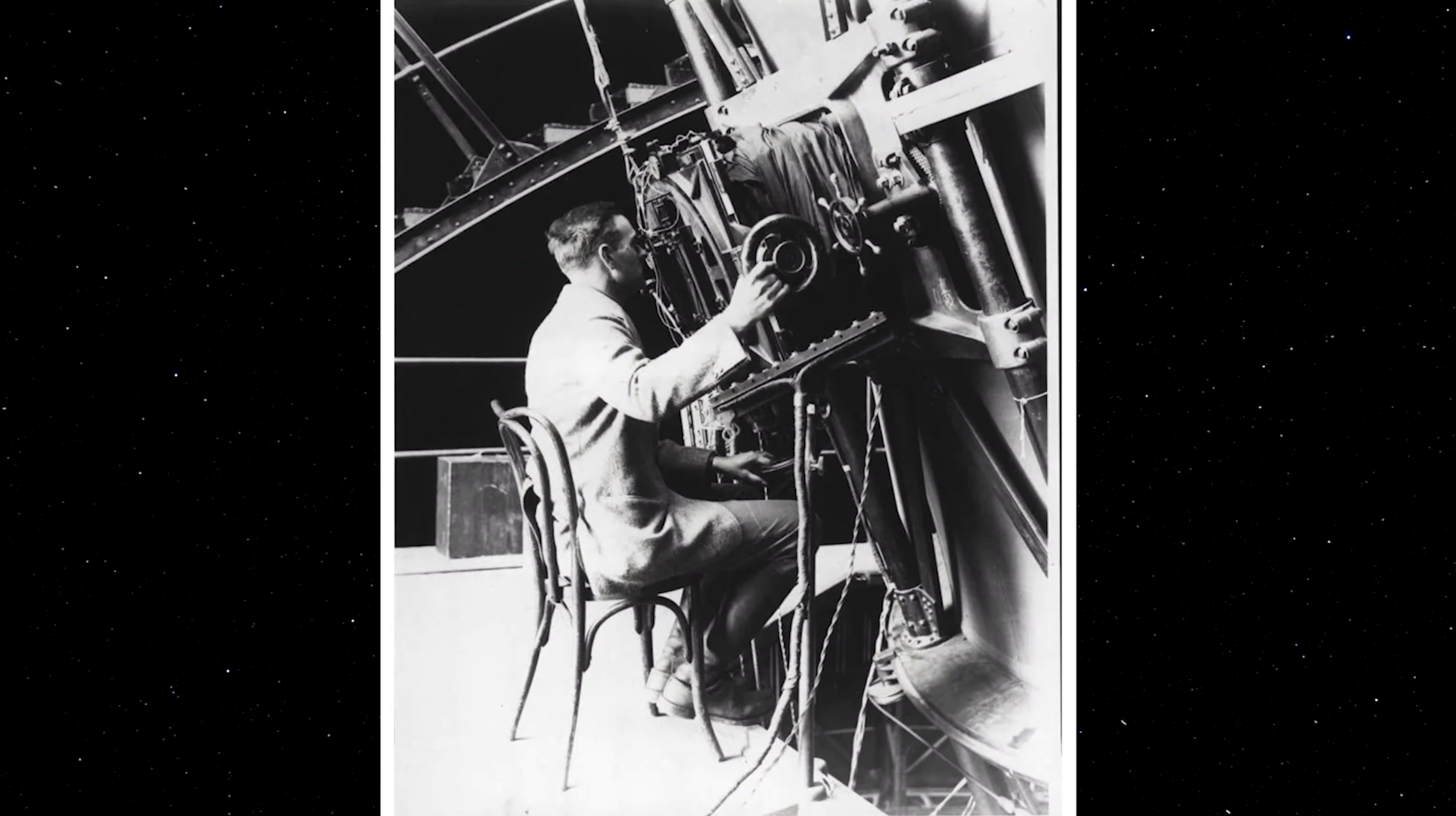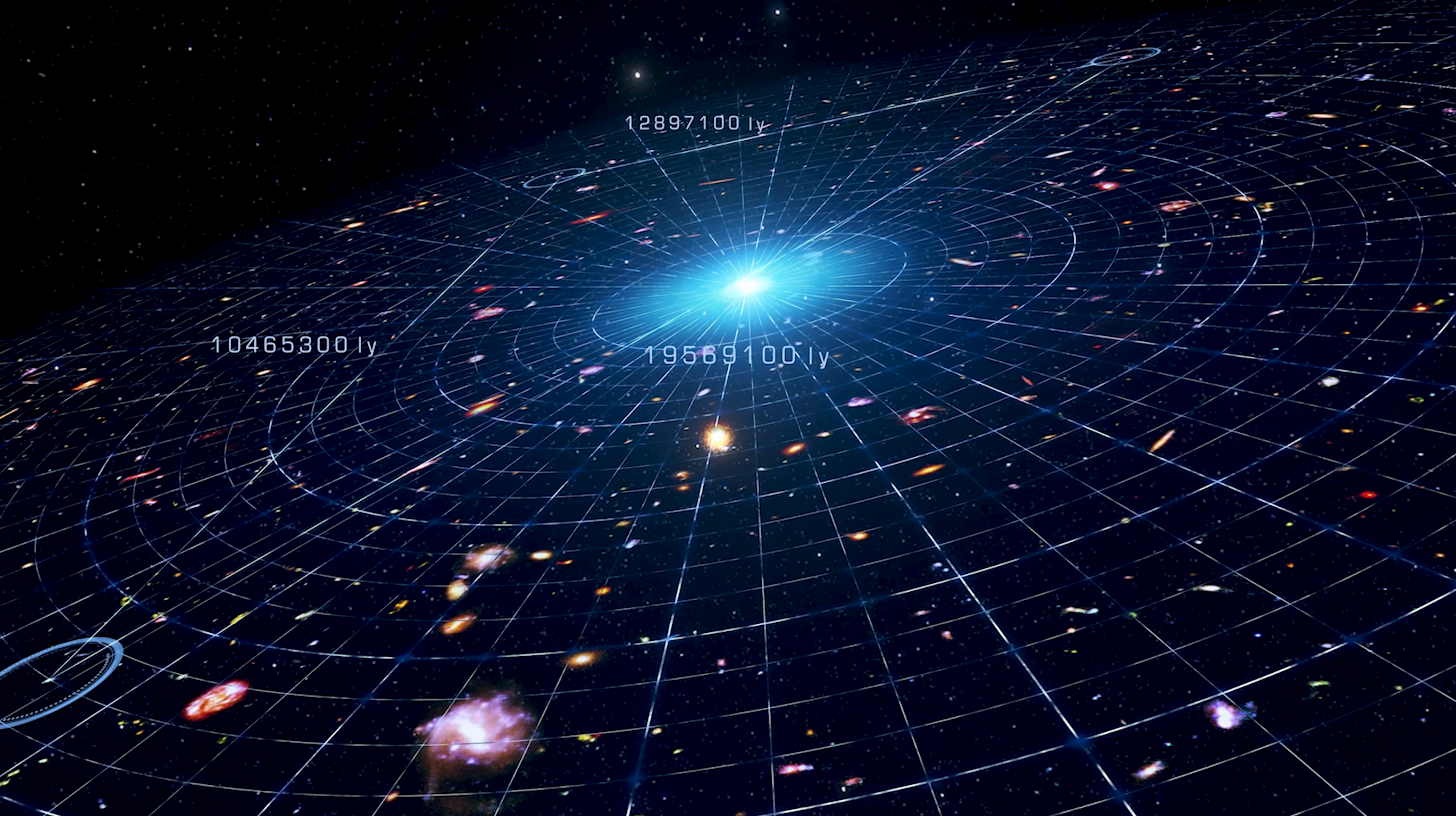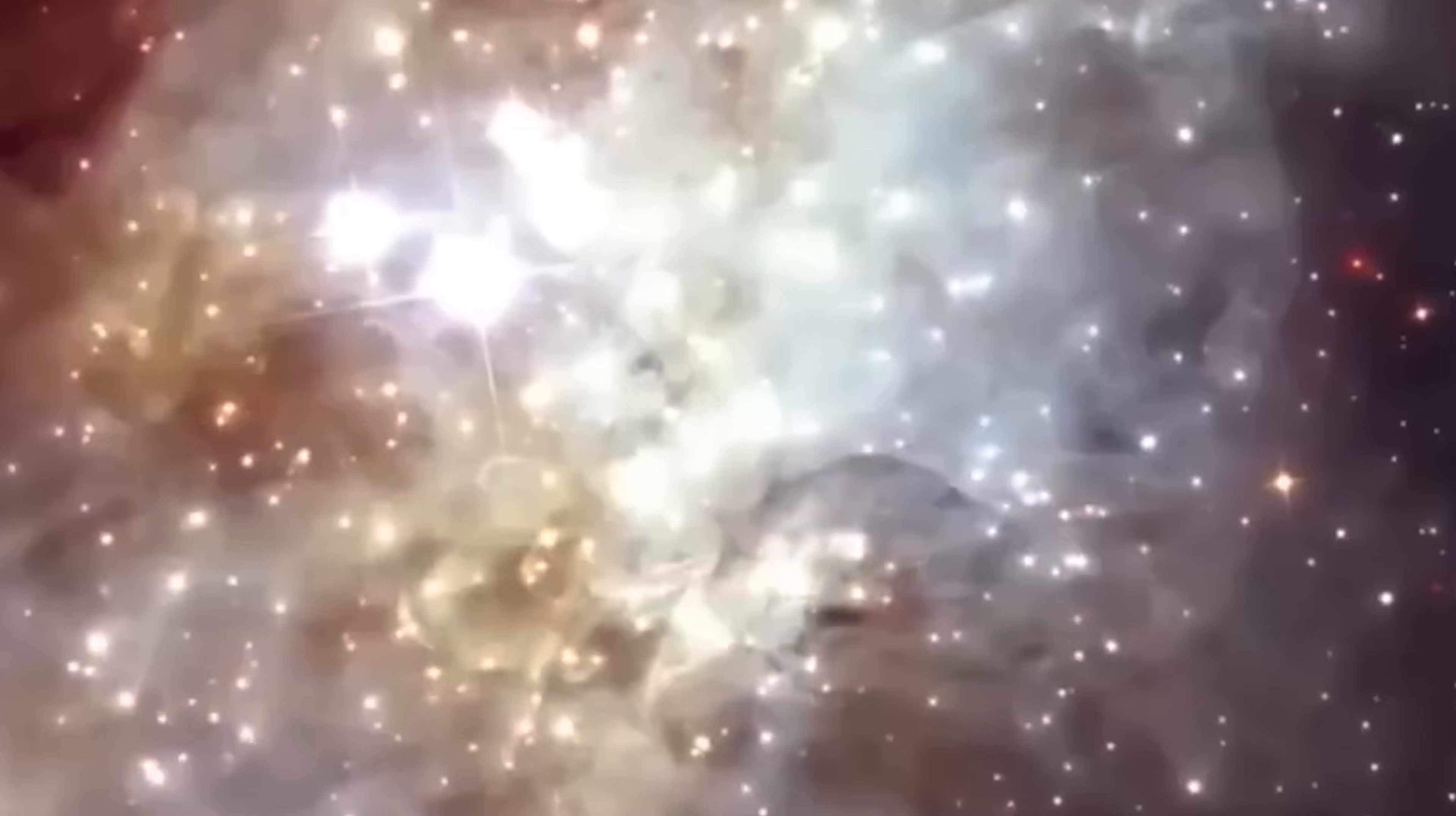Back in 1929, Edwin Hubble made a discovery that changed everything. He found that galaxies aren't just scattered randomly through space. They're all moving away from each other. Space itself is expanding. And here's the strange part. This expansion has no center. Wherever you are in the universe, it looks like everything else is rushing away from you. Every observer sees themselves at the center of expansion. And it's not just expanding. It's accelerating.